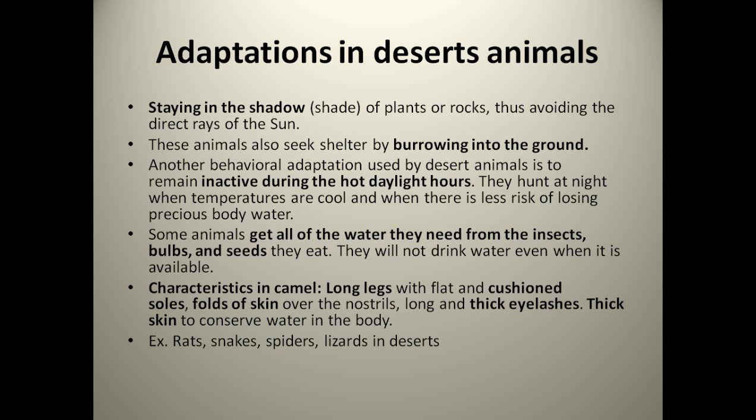Desert animals always stop in a shady area to avoid direct sun rays falling on their body. We all know that in desert areas there is very hot temperature. So these animals always try to stay in the shadow. They also seek shelter by burrowing into the ground.